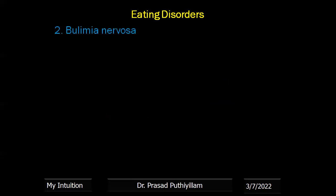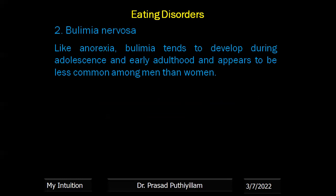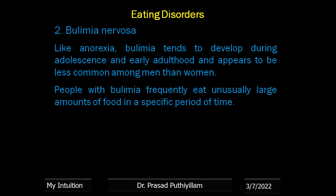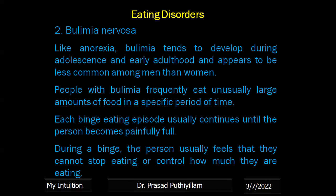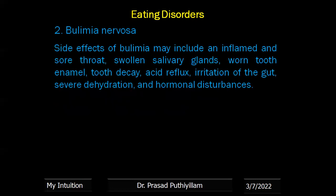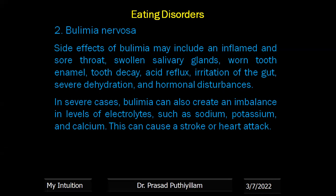Bulimia nervosa also tends to develop during adolescence and early adulthood and appears to be less common among men than women. People with bulimia frequently eat unusually large amounts of food in a specific period of time, and each binge eating episode usually continues until the person becomes painfully full. During a binge, the person usually feels they cannot stop eating or control how much they are eating. Side effects of bulimia may include an inflamed and sore throat, swollen salivary glands, worn tooth enamel, tooth decay, acid reflux, irritation of the gut, severe dehydration and hormonal disturbances. In severe cases, bulimia can create an imbalance in electrolytes such as sodium, potassium and calcium, which can cause a stroke or heart attack.